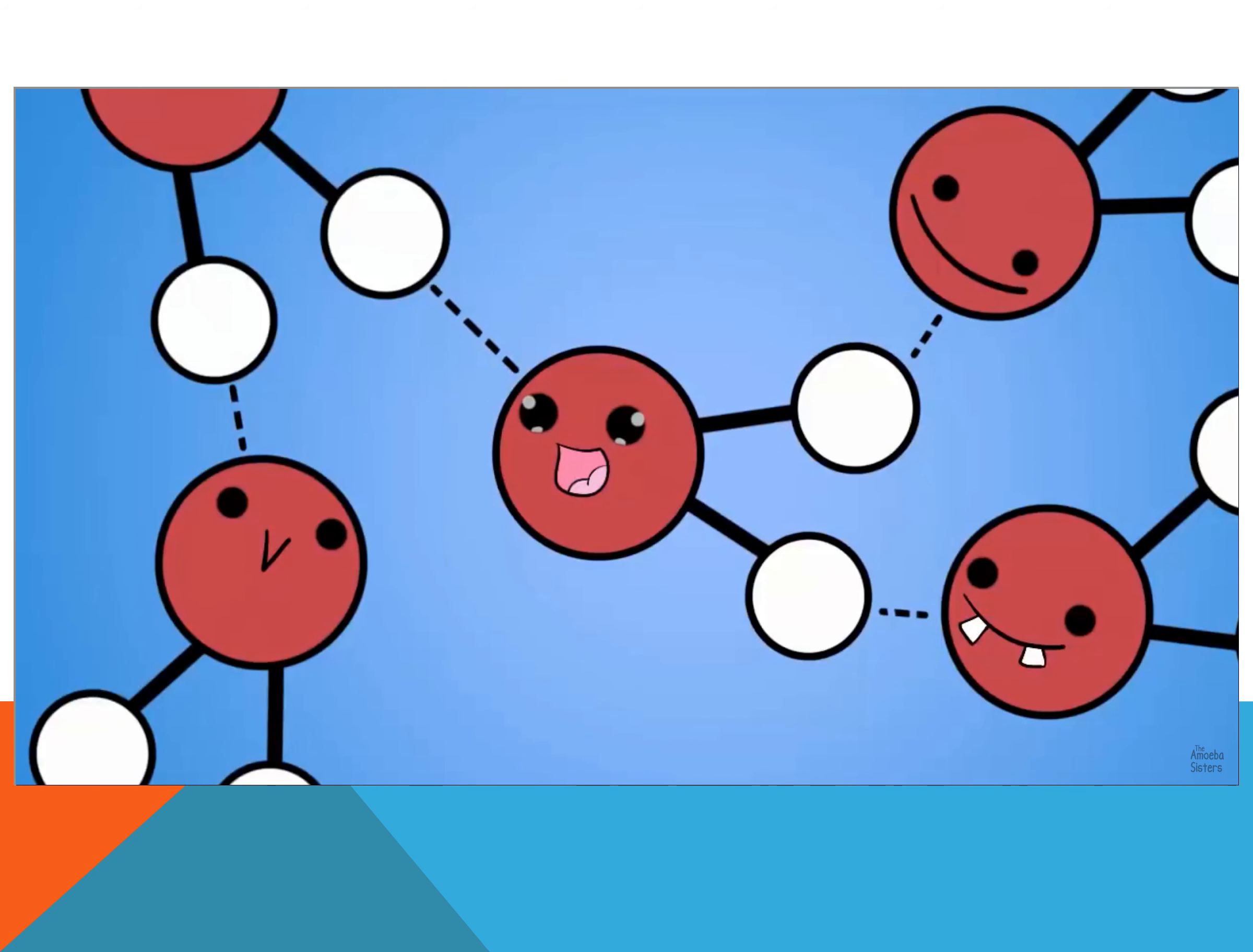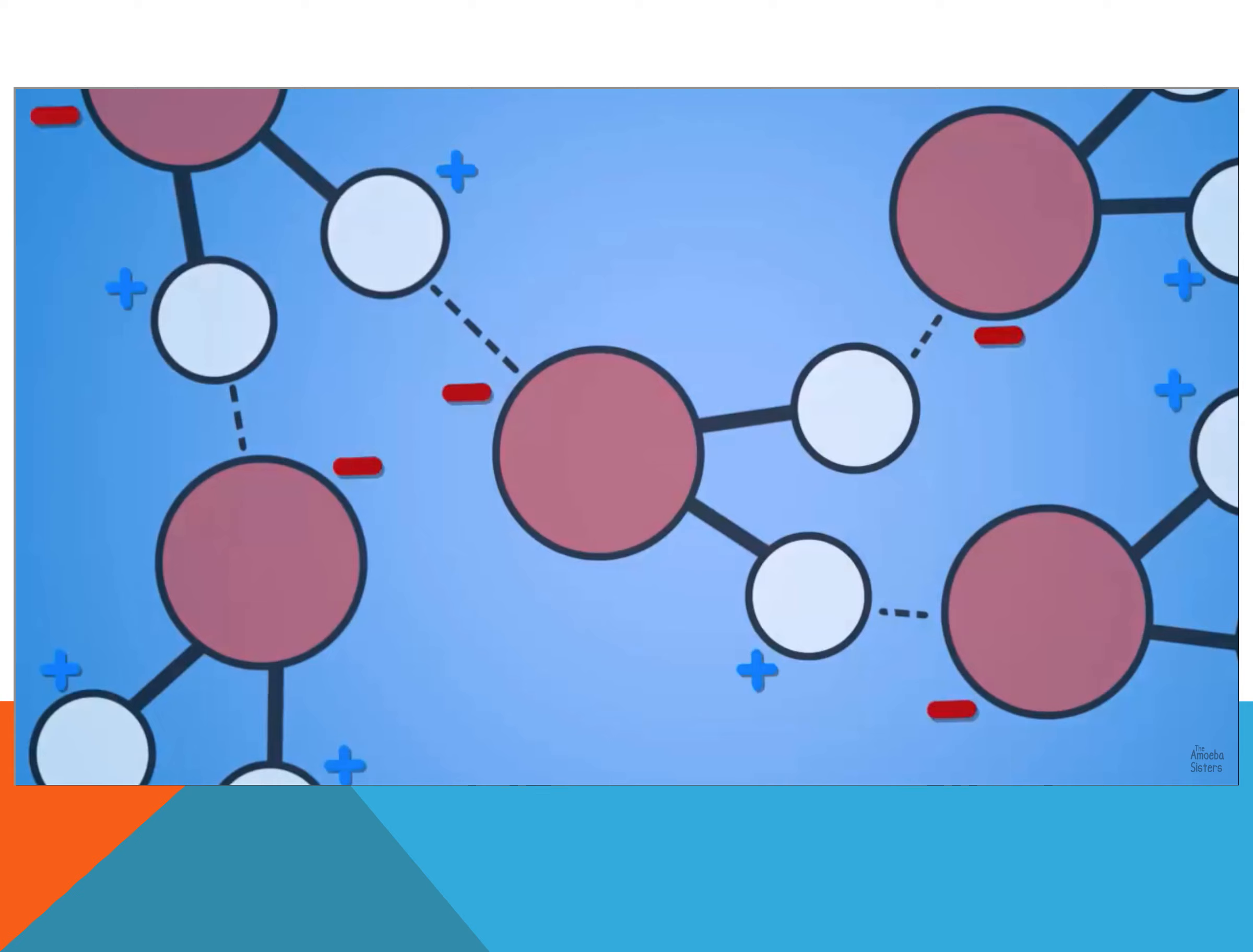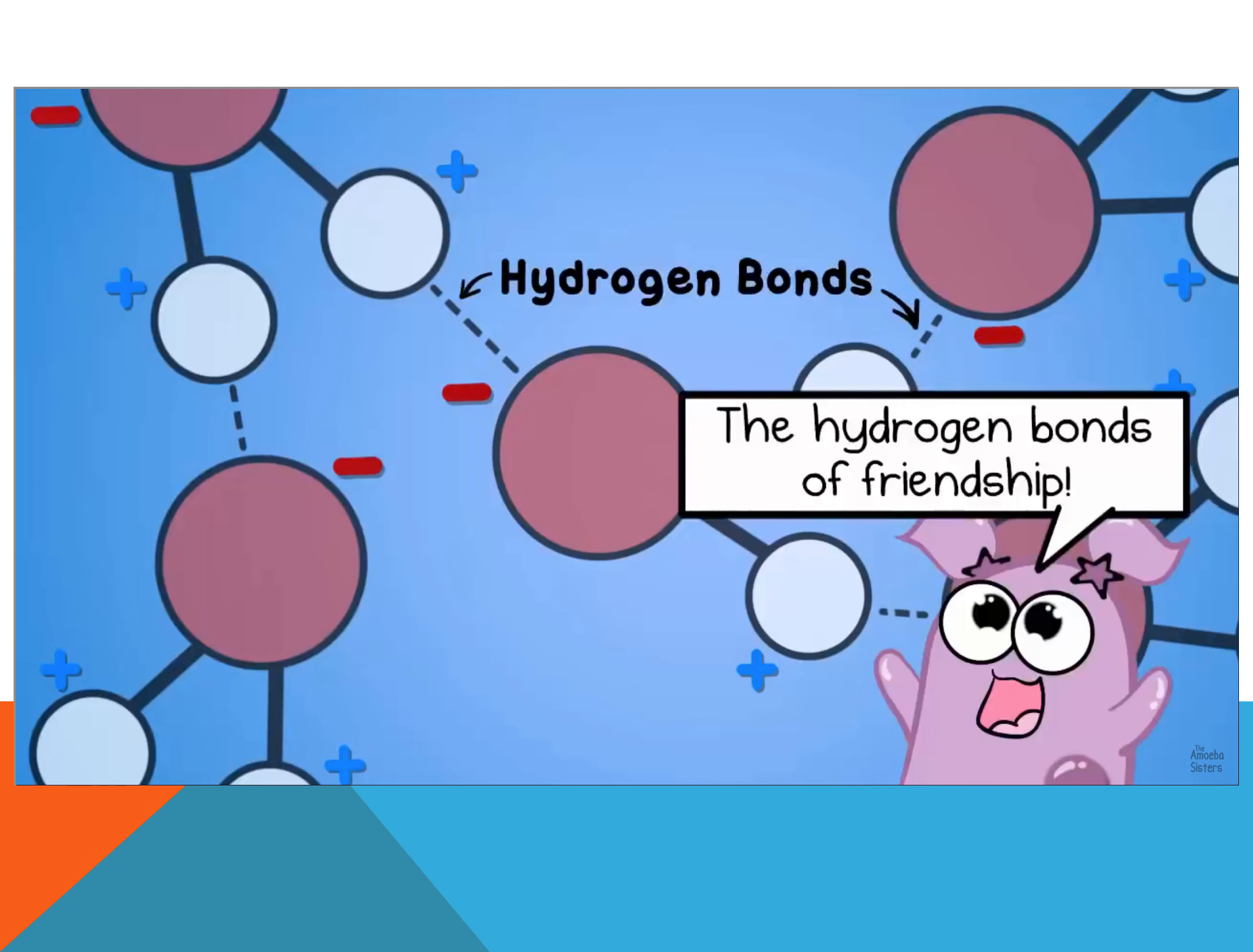Well, that means that other water molecules have an easy time bonding together. Why? Because the hydrogen of one water molecule with its slightly positive charge can bond to another water molecule's oxygen with that slightly negative charge. These bonds among the water molecules are hydrogen bonds. And these are the very bonds that allow water to have many of the properties that we're about to talk about.